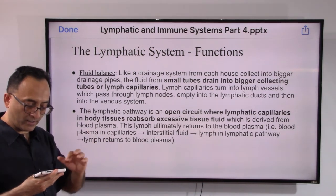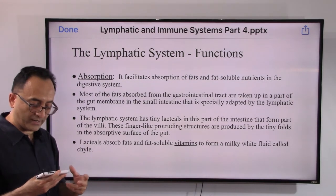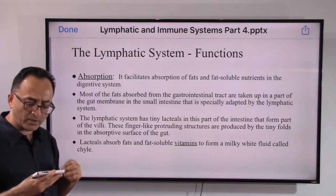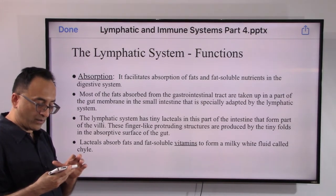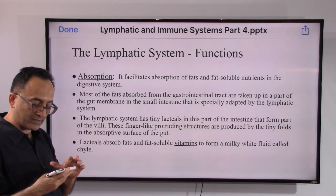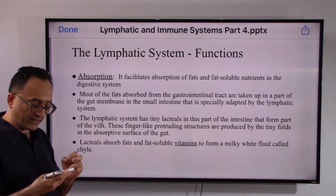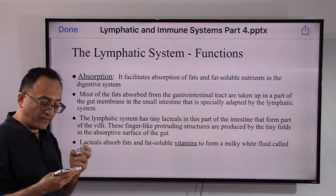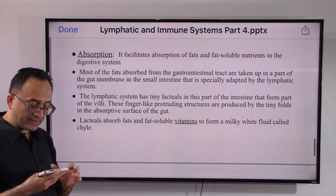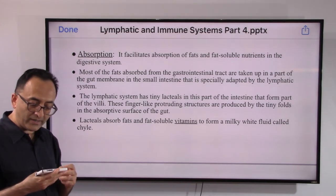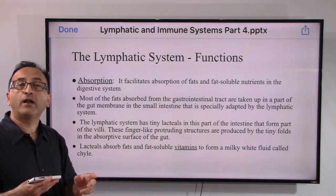The second important function of the lymphatic system is absorption — it facilitates the absorption of fats and fat-soluble nutrients in the digestive system. Most fats absorbed from the GI tract are taken up in a part of the gut membrane in the small intestine specially adapted by the lymphatic system. The lymphatic system has tiny lacteals in this part of the intestine forming part of the villi — finger-like projecting structures that absorb fats and fat-soluble vitamins, forming a milky white fluid called chyle.